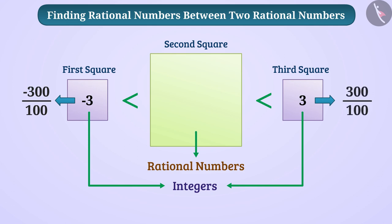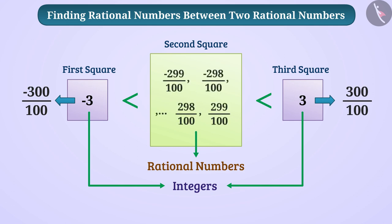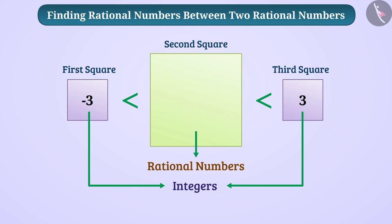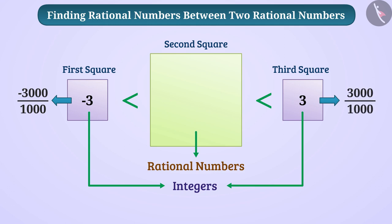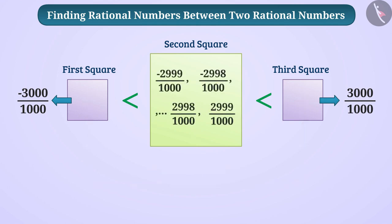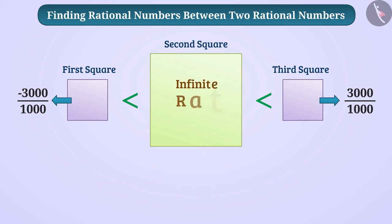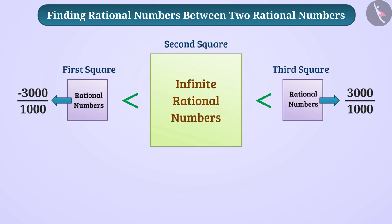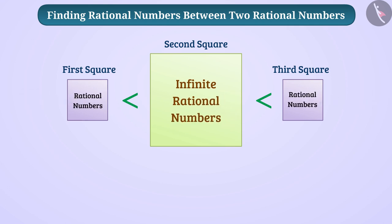We can also write minus 3 as minus 3000 divided by 1000 and 3 as 3000 divided by 1000. In this way we can find infinite rational numbers between any two rational numbers — that is, there are infinitely many rational numbers between any two rational numbers.